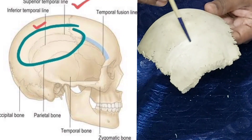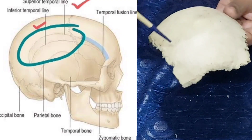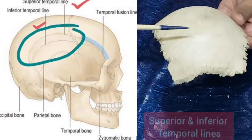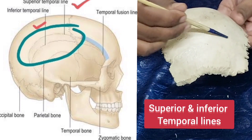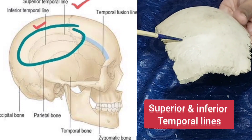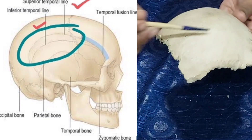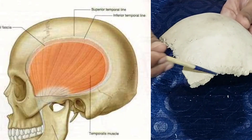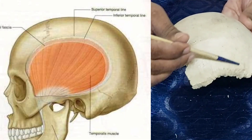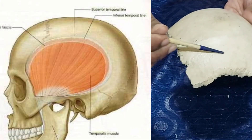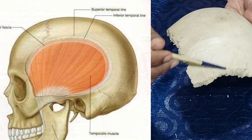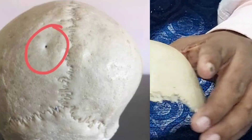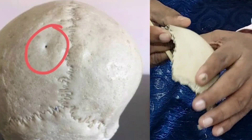There are two lines on the external surface: the superior and inferior temporal lines. The superior temporal line gives attachment to the epicranial aponeurosis, and the inferior temporal line and the surface below it give attachment to the temporalis muscle.